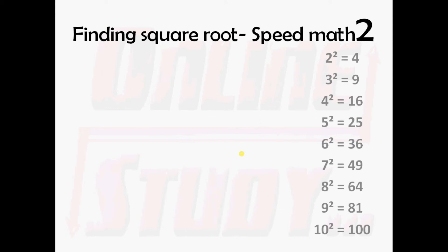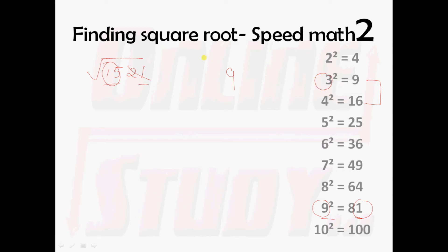Let's take some problems so that the concept becomes very clear. We shall take an example of root of 1521. What will be the first step? We need to note the last digit. The last digit is 1. For 9 square, 81 — 1 is the last digit. So select 9. Next important step: strike out the last 2 digits, 21. You remain with 15. Check in the table where 15 lies — 15 lies between 9 and 16, that is between 3 square and 4 square. Select the lower limit, that is 3. So root of 1521 is 39.